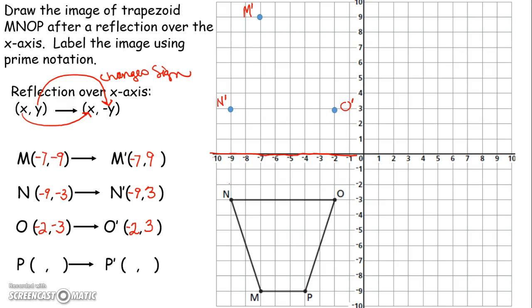And finally, let's take a look at P. P was negative 4, negative 9. Negative 4, negative 9. So for P prime, you keep the x-coordinate. If it was negative 4, you keep it negative 4. Negative 9 becomes a positive 9. So there you go. And there's P prime. So then you would connect up those points. N to M, M to P, P to O, O prime to N prime.